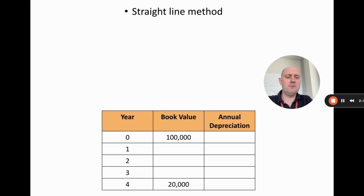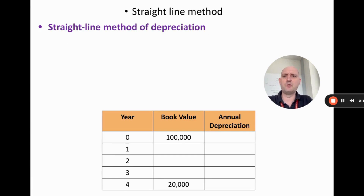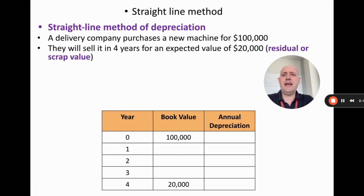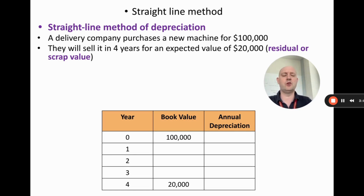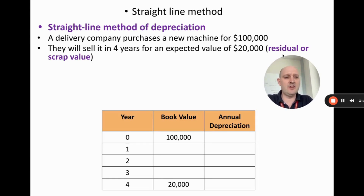I'm going to do most of this video using examples. So let's say a delivery company buys a new machine for $100,000 and they're going to sell it in four years for an expected value of $20,000. A piece of vocabulary here: this $20,000 that they sell it for is called the residual value, which is the remaining value at the end of the lifetime. The scrap value would be if they threw it away or scrapped the machine later on.